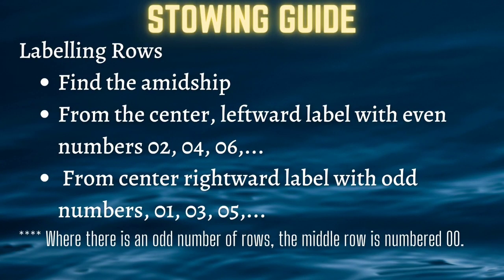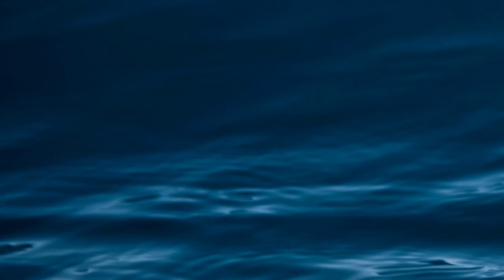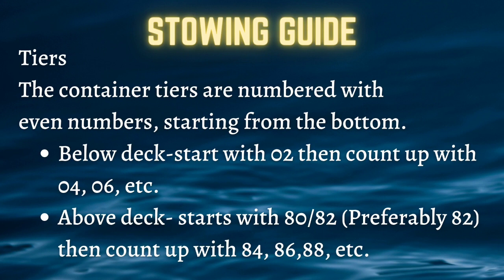When labeling the rows, first find the amidship. From the center leftward, label with even numbers starting from 02 then 04, 06, 08 onwards. From the center rightward, label with odd numbers: 01, 03, 05 onwards. Just in case there is an odd number of rows, the middle row is numbered 00.